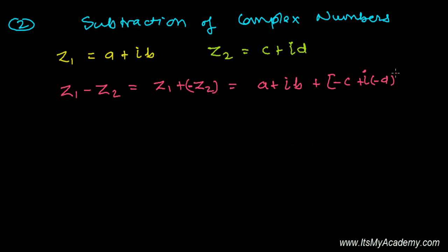Now isn't this the same as the addition of two complex numbers? The real part and real part get added, A plus minus C, and the imaginary parts get added.